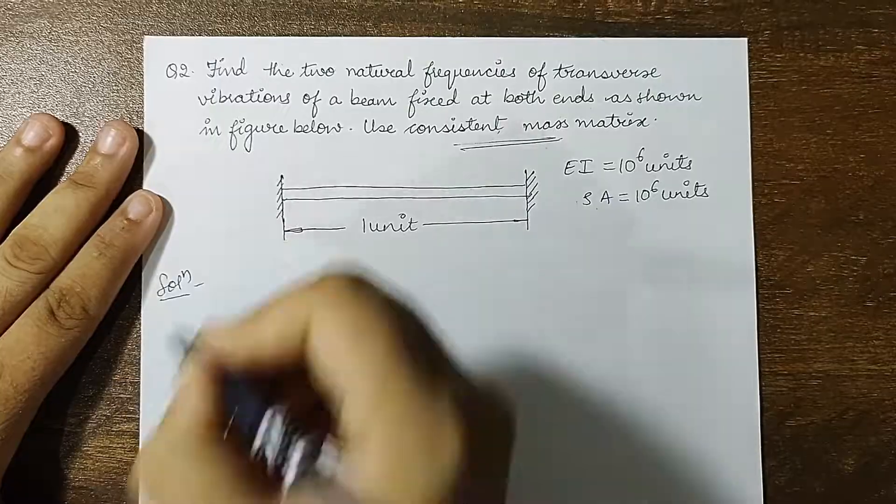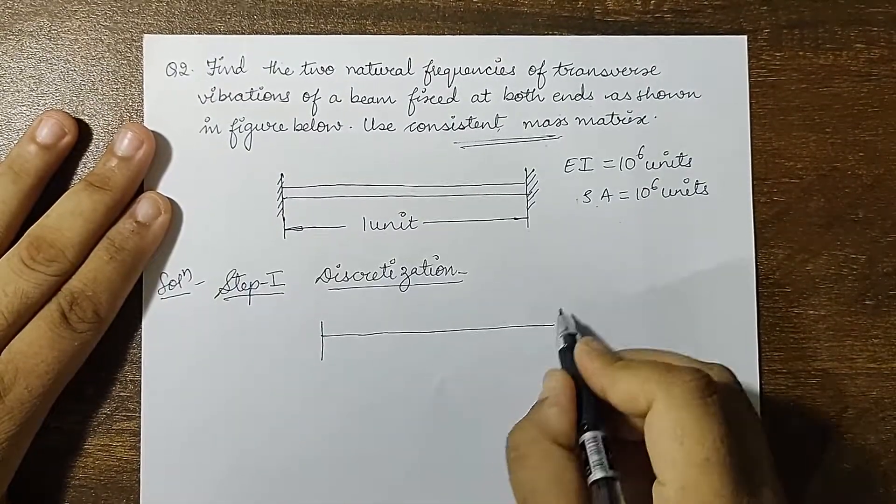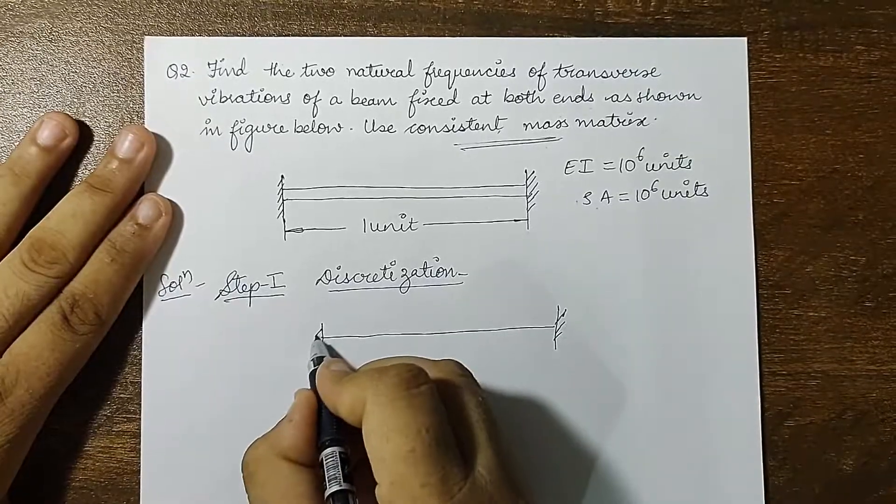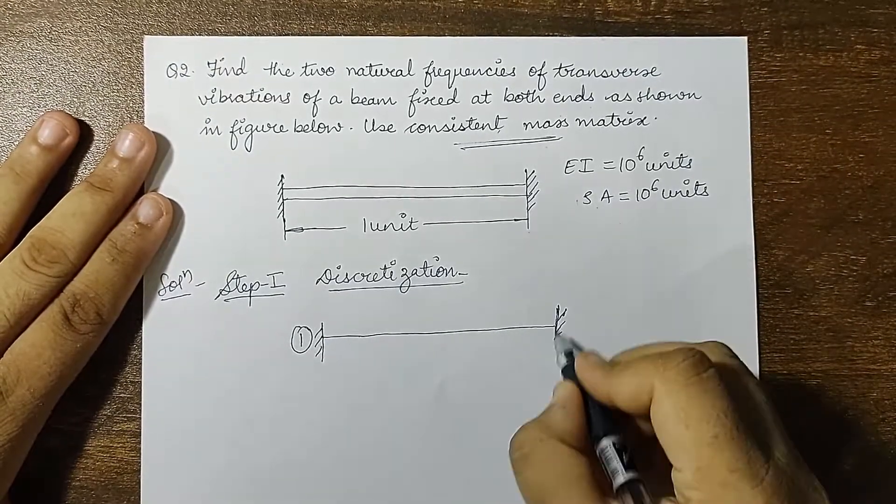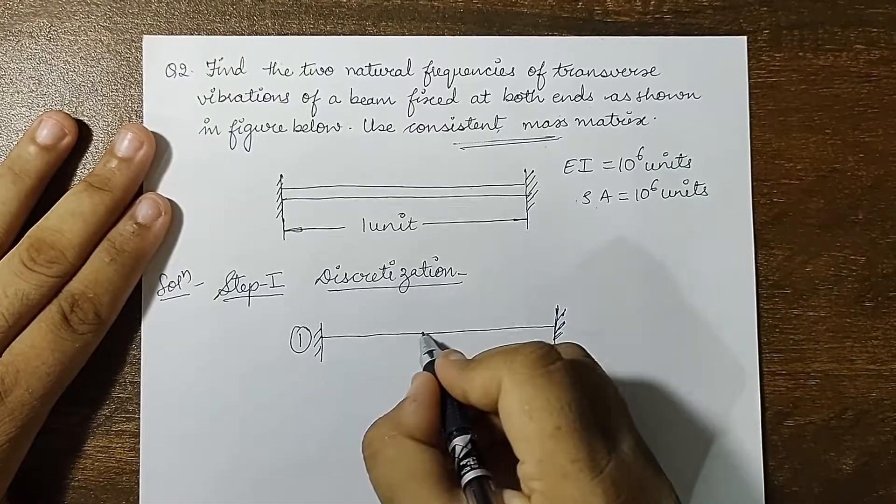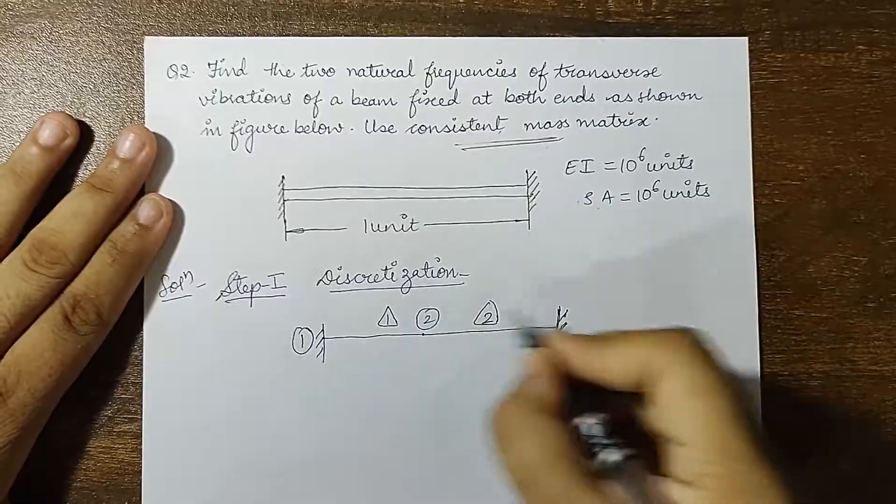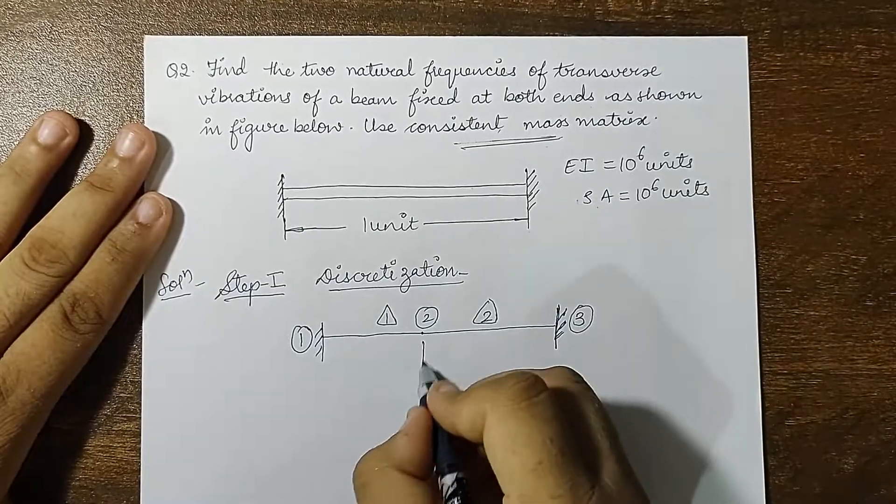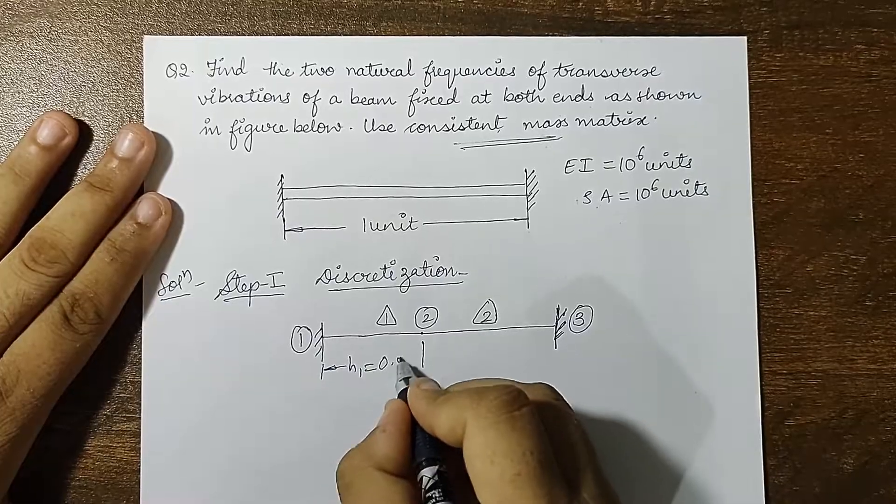We will start solving. My first step is discretization. I will draw the beam. Both ends are fixed. Let me divide this entire body into two element form. One element here and this is my second element. This is node 2 and this is node 3. These two will have equal length, 0.5 unit each.